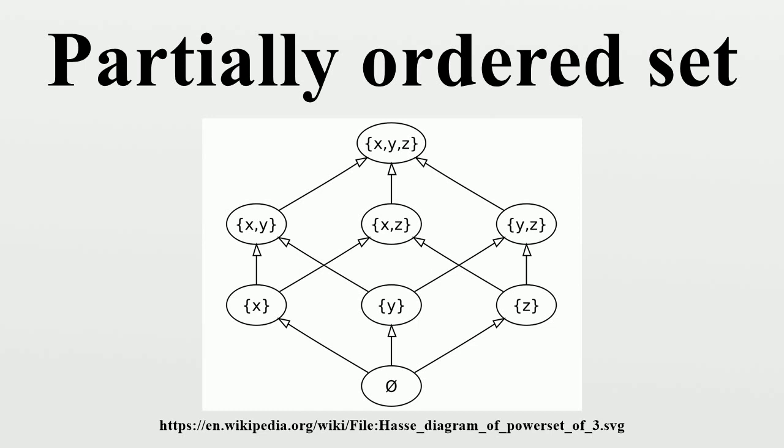Strict and non-strict partial orders: In some contexts, the partial order defined above is called a non-strict partial order. In these contexts, a strict partial order < is a binary relation that is irreflexive, transitive, and asymmetric, which satisfies for all A, B, and C in P: not A < A; if A < B and B < C then A < C; and if A < B then not B < A.